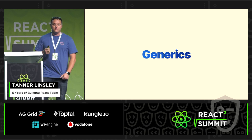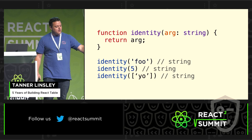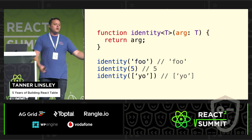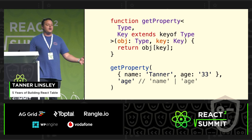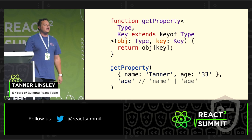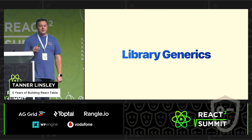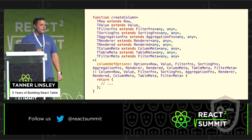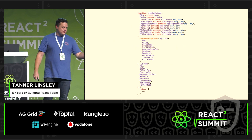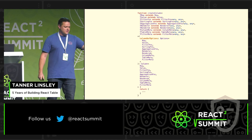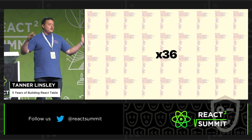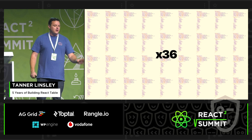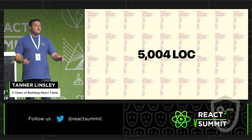Let's talk about generics really quick. It's basically the process of taking something that would be typed statically, like a string, and giving your types variables so that you can pipe those types into your system and back out to your users. You can also use multiple generics to extract information out of types and provide it back to the user in the form of autocomplete. Library generics are on another level — look at the createColumn function for React Table: that's 10 generics. Run it through Prettier and you see what we're actually working with. There are at least 36 functions in React Table that all consume about the same amount of generics. Does anybody know how many lines of code that is? That's 5,000 lines — but not lines of code. Lines of types.